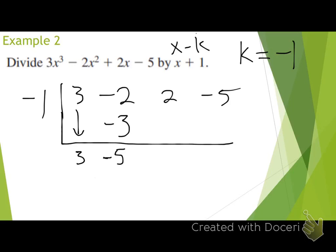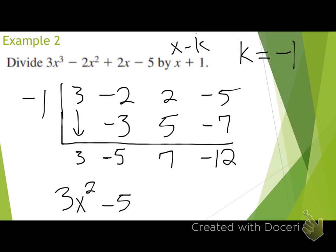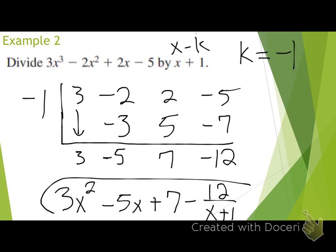What do I do with that negative 5 now? Multiply — negative 5 times negative 1 is positive 5, goes below my 2. What's 2 plus 5? Then negative 1 times 7, and negative 5 plus negative 7. So the answer is: 3x squared minus 5x plus 7 minus 12 over x plus 1.